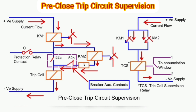If both KM1 and KM2 relays do not operate, the TCS relay will not operate and the contact of TCS will remain in the NC state. The annunciation window will glow in this case, indicating that either the supply is missing, the trip coil is open, or there is a defect in the wiring of the trip circuit supervision circuit.